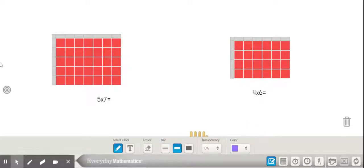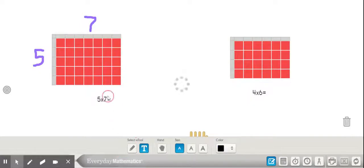I'm going to take my marker and make note of that. I'm going to write a 5 on this side of the array and then I'm going to write a 7 on this side. Looking at my text box, you'll see that I have 5 times 7.